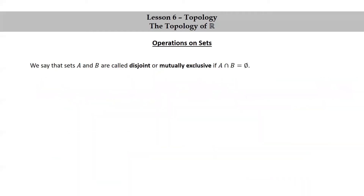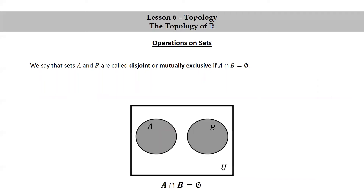Now, we say that sets A and B are disjoint or mutually exclusive if the intersection of A and B is empty. Here's a Venn diagram illustrating two disjoint sets. Notice that they do not touch each other. So this is a Venn diagram of the intersection of A and B being empty.